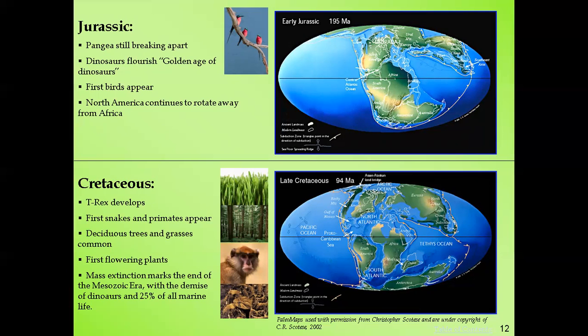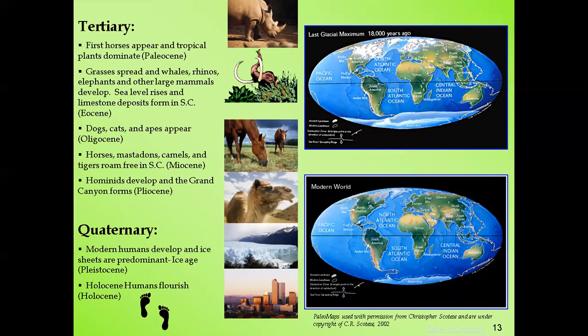Next is the Cenozoic, or the latest age. Under the Tertiary period, the first horses appeared and tropical plants dominated in the Paleocene epoch. In the Eocene, grasses spread and whales, rhinos, elephants, and other large mammals developed, with sea levels rising and limestone deposits forming. In the Oligocene, dogs, cats, and apes appeared.